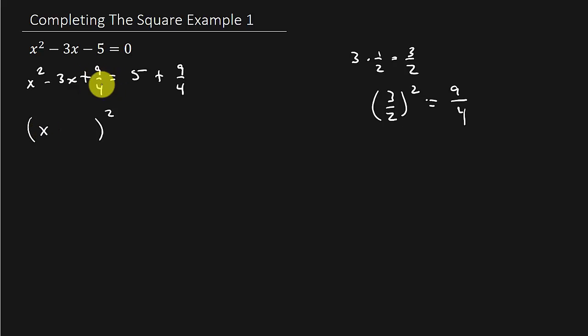Look at the last term. What's the square root of 9 fourths? 3 halves. And then what's the sign in the middle? The minus. So it's the square root of the first term, square root of the last term, and then this sign goes in between.